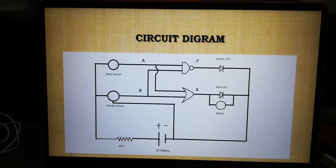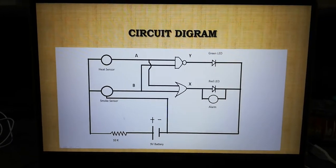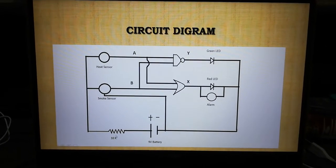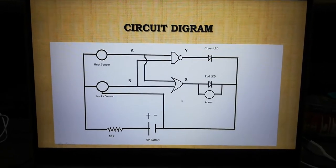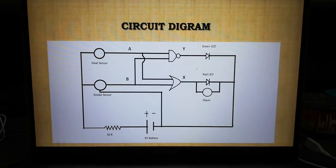In this circuit I used one heat sensor, one smoke sensor, one 10k resistor, one 9-volt battery, one OR gate, one AND gate, one green LED, one red LED, and an alarm.